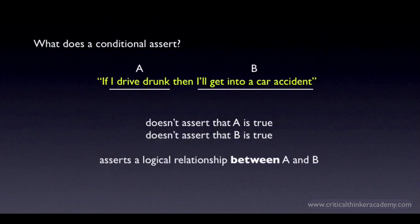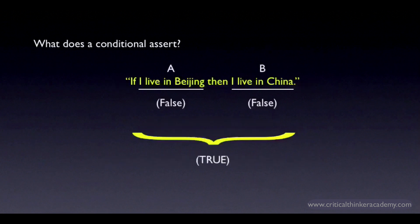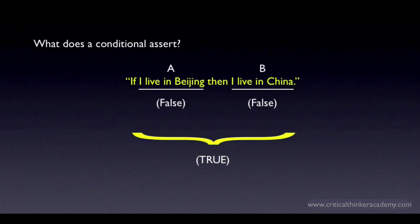It follows that a conditional can be true even when both the antecedent and the consequent are false. Here's an example: if I live in Beijing, then I live in China. I don't live in Beijing and I don't live in China, so both the antecedent and the consequent are false. But this conditional is clearly true — if I did live in the city of Beijing, I would live in China.